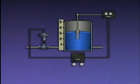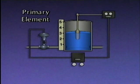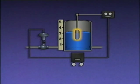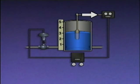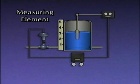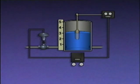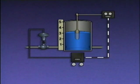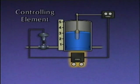As with all automatic control systems, this system has four basic parts, or elements. One element, the primary element, is a sensing device that's located where the process variable is monitored. In this system, the primary element is a float that senses the level of water in the tank. The float is connected through a mechanical linkage to the second element in the system, a measuring element. In this system, the measuring element is a transmitter. The transmitter detects the position of the float and transmits a signal representing the level in the tank to the third element in the system, a controlling element.